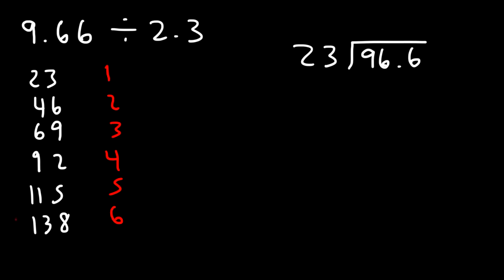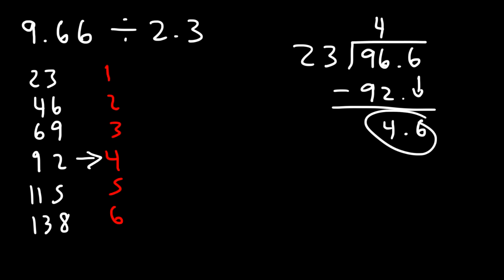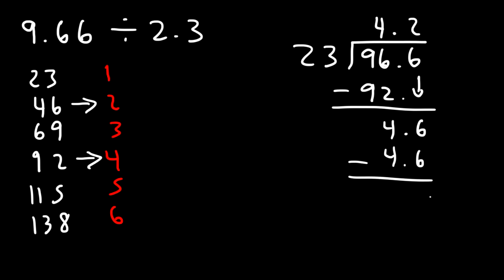How many times does 23 go into 96? The highest number just under 96 is 92, so 23 goes into 96 four times — 23 times 4 is 92, and 96 minus 92 is 4. Bringing down the 6 gives us 4.6. Since 23 doesn't go into 4.6, we add a decimal point and treat it as 46. 23 goes into 46 exactly two times, so 9.66 divided by 2.3 is 4.2.